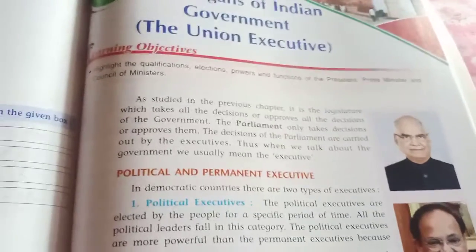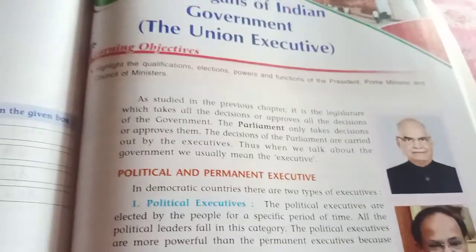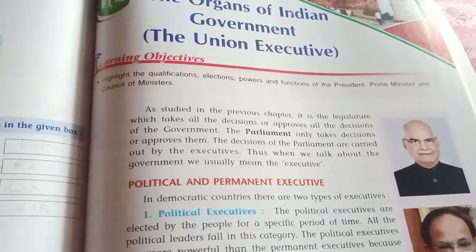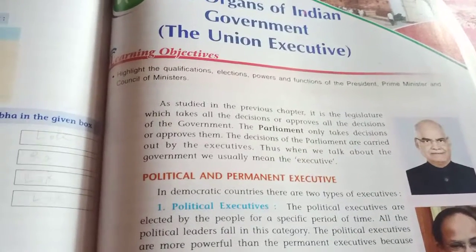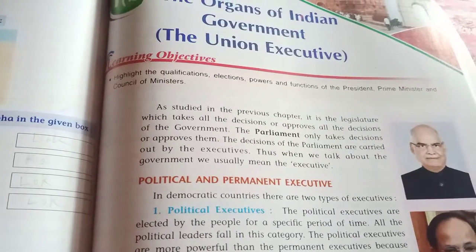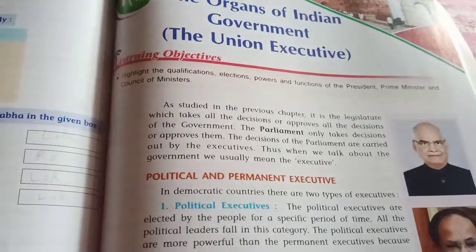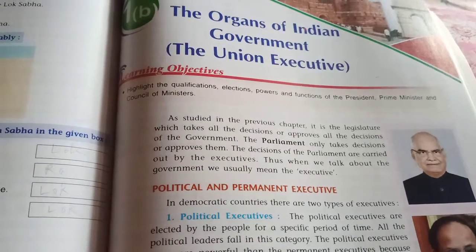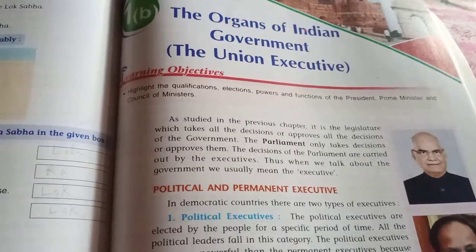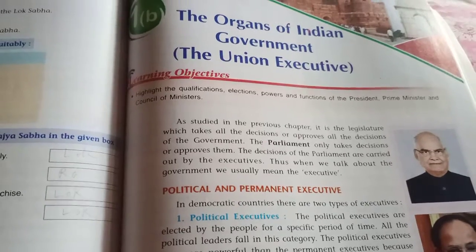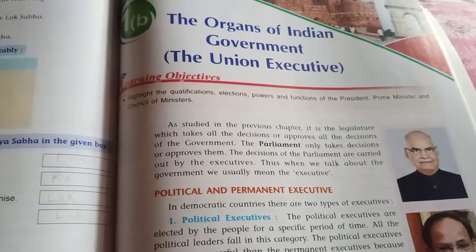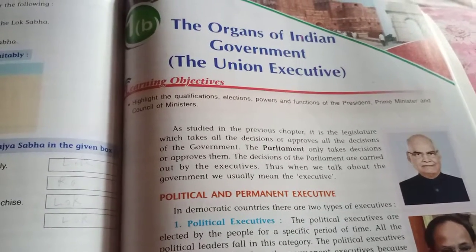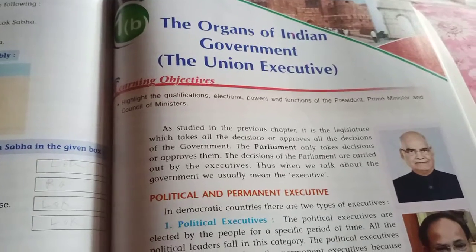Hello my dear students, welcome back to our civics class. In our previous class, the first chapter of your civics lesson — the organs of Indian government — we discussed that there are three organs of Indian government: first is legislature, then executive and judiciary.